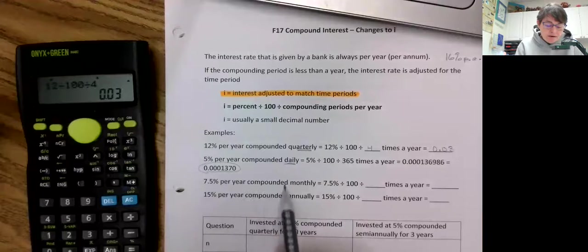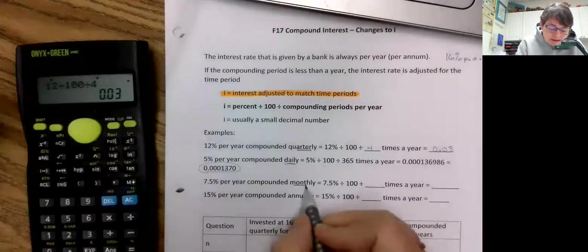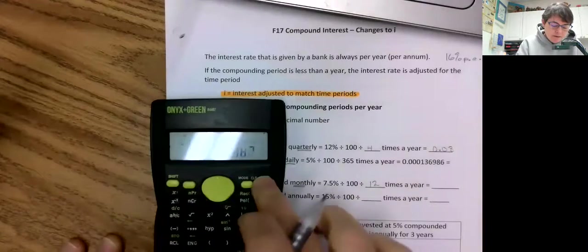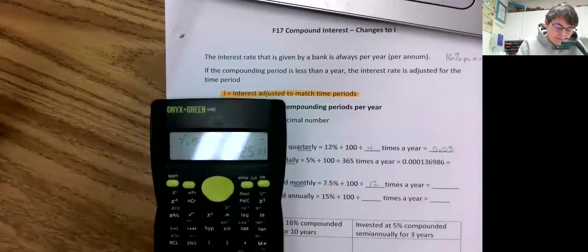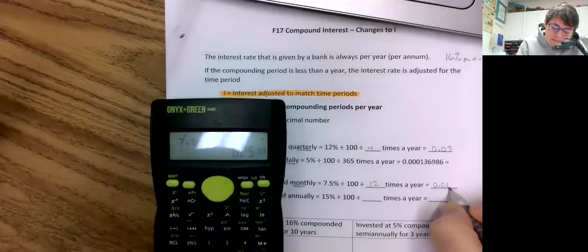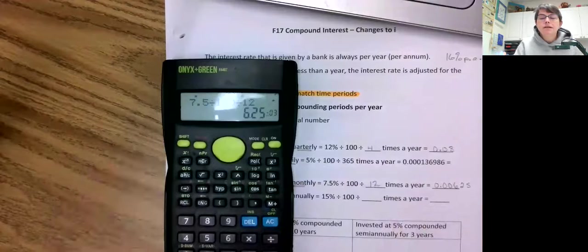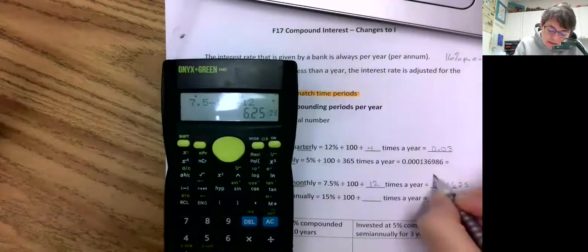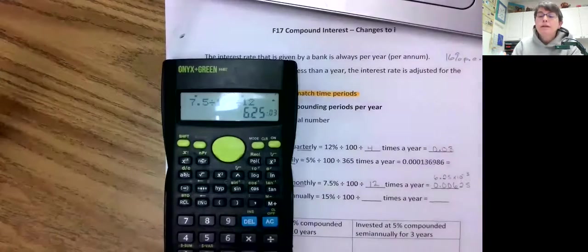Okay, 7.5 per year compounded monthly. So 7.5 divided by 100, so this part like before, you're just converting it into a decimal. Now monthly, divide by 12 times per year. So 7.5 divided by 100 divided by 12. Uh oh. 0.006... I said uh oh because I forgot, this calculator apparently, and it's flipped it over into scientific notation for me. And it has 6.25 times 10 to the minus 3.